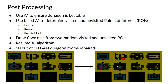At this point we have GAN-generated rooms inside a dungeon, however not all GAN rooms are beatable. To ensure that the dungeon is beatable, we need to run an A-Star agent. Using data from a failed A-Star agent — meaning it didn't reach the Triforce — we can determine visited and unvisited points of interest within a room. Points of interest include doors, items, and puzzle blocks, as they are necessary to beat a room. Using this data, we can draw floor tiles between two random visited and unvisited points of interest, then resume the A-Star algorithm until it beats the dungeon. The pictures show an unprocessed dungeon on the left and a processed dungeon on the right, with the red circle highlighting areas where the post-processing algorithm drew floor tiles. Using this technique, 10 out of 30 GAN dungeon rooms were prepared.